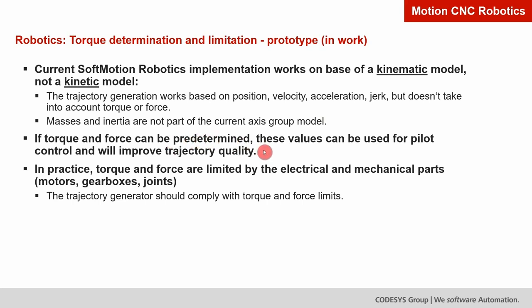The other part is that in practice, velocity and acceleration are normally not the limiting factors for mechanical parts — mostly it is torque and force for motors, gearboxes, and joints. If we can introduce and comply with limits at the neuralgic points, we will be able to generate even more efficient trajectories.